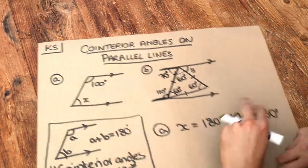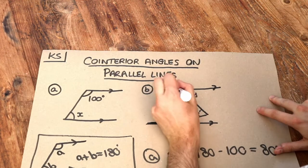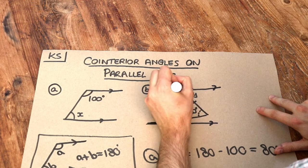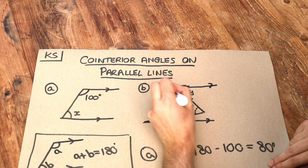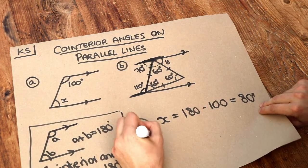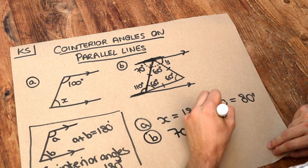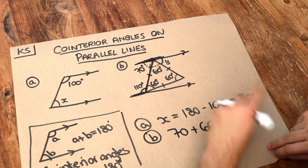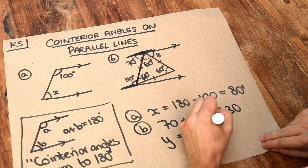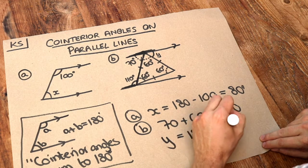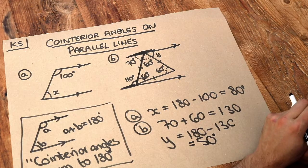If that angle is 110 degrees, this other angle is going to be 180 minus 110, which is 70 degrees. At this point we've got three angles on a straight line, so they add up to 180. Doing 70 plus 60 gives 130, and therefore the remaining angle y must be 180 minus 130, which is 50 degrees.